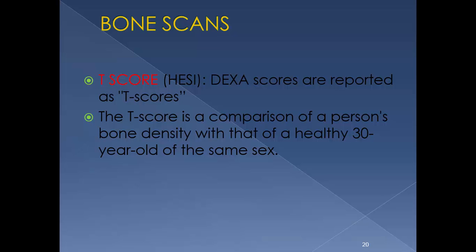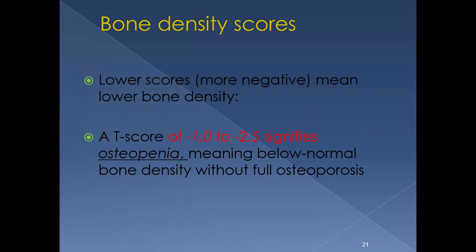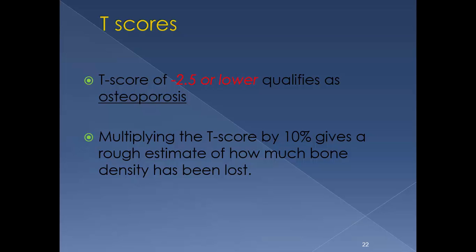Bone scan results are reported as T-scores. A T-score is a comparison of the person's bone density with that of a healthy 30-year-old of the same sex — lower, more negative scores mean lower bone density. A T-score of negative 1 to negative 2.5 signifies osteopenia, meaning below normal bone density without full osteoporosis. A T-score of negative 2.5 or lower qualifies as osteoporosis. Multiplying that T-score by 10% gives a rough estimate of how much bone density has been lost.